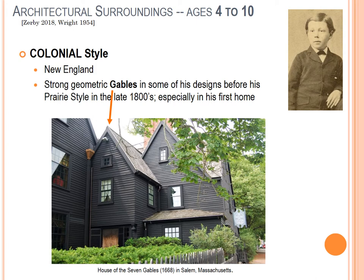They moved to New England from Wisconsin — his father was a preacher looking for work after the Civil War. Ages four to ten, FLW was in New England. The colonial style is common in New England's original 13 colonies, especially up the northeast in Massachusetts.